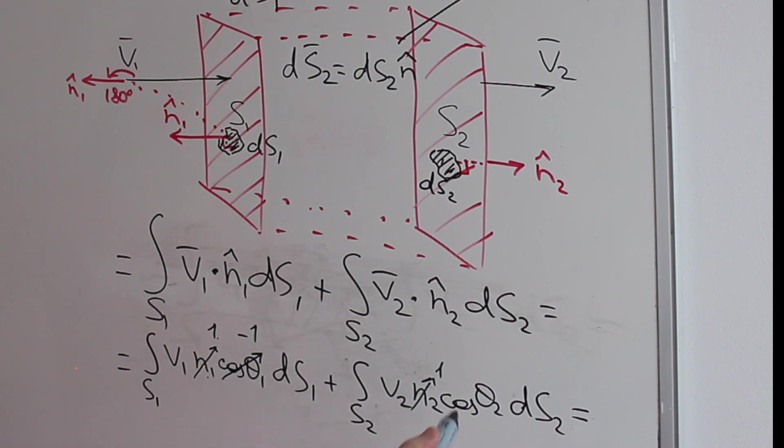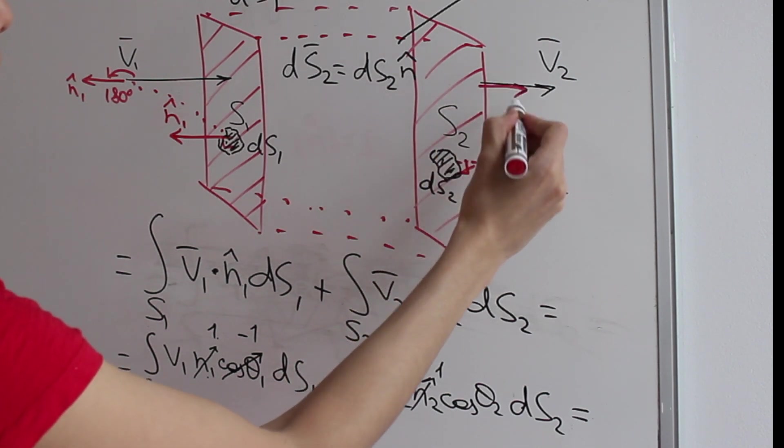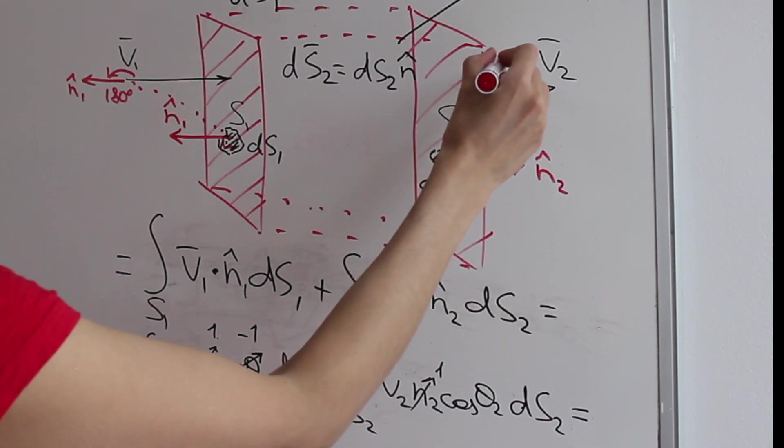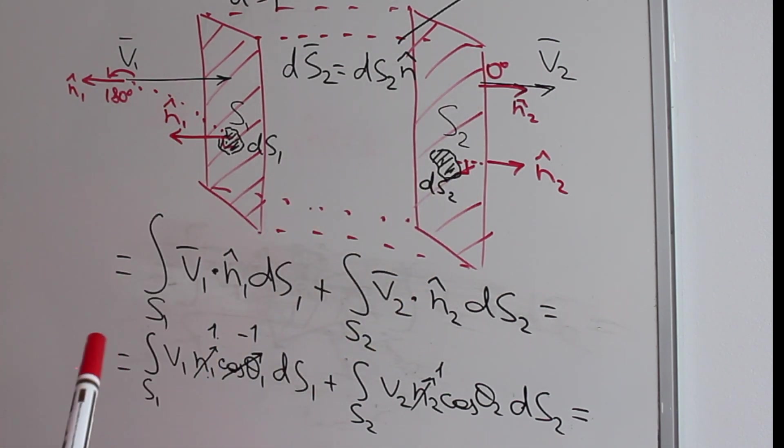In the second integral, what's the cosine of theta 2? Well, if we move n hat here, the angle is 0 degrees because these two vectors are pointing in the same direction. What is the cosine of 0 degrees? It's 1.